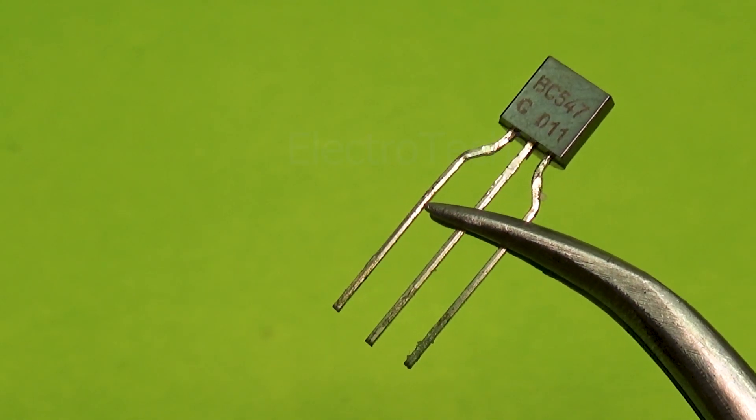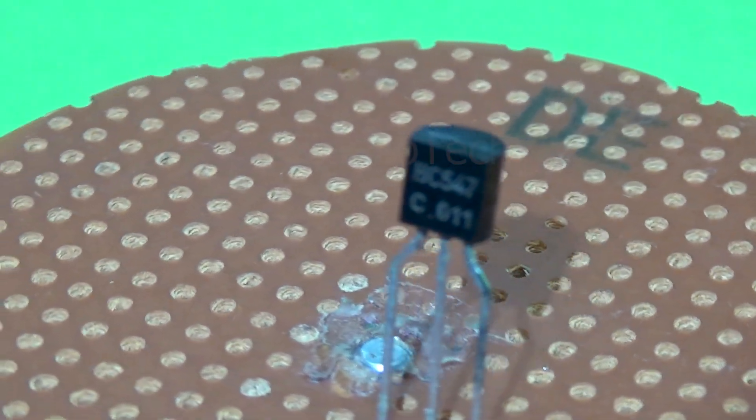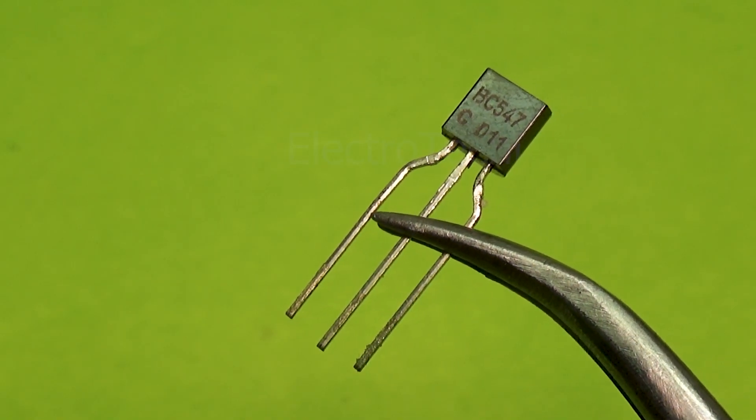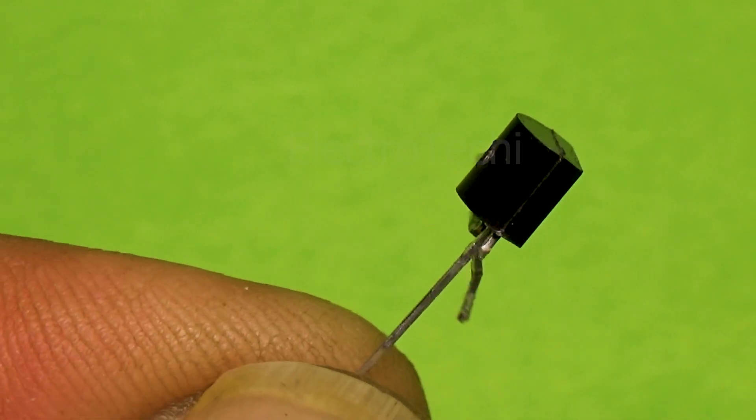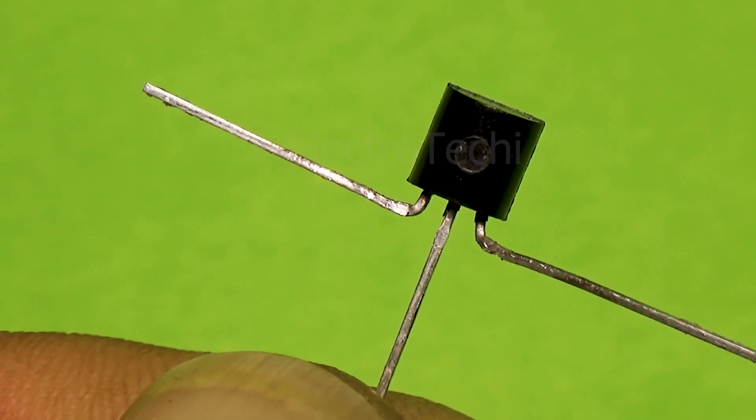BC547 transistor. The BC547 is an NPN bipolar junction transistor. It has three terminals: collector, base, and emitter. In this circuit, the transistor acts as a switch. When a small voltage is applied to the base, it allows a larger current to flow from collector to emitter, turning the LED on.